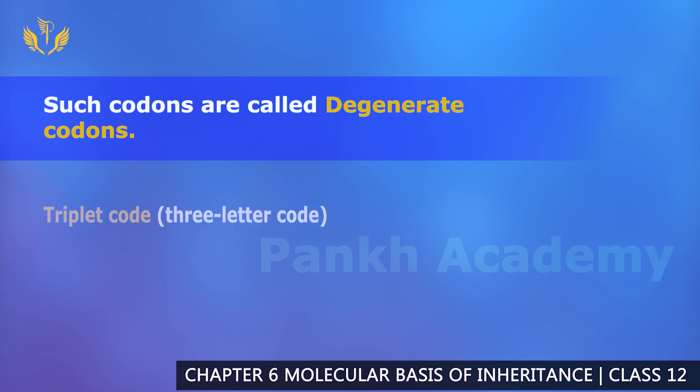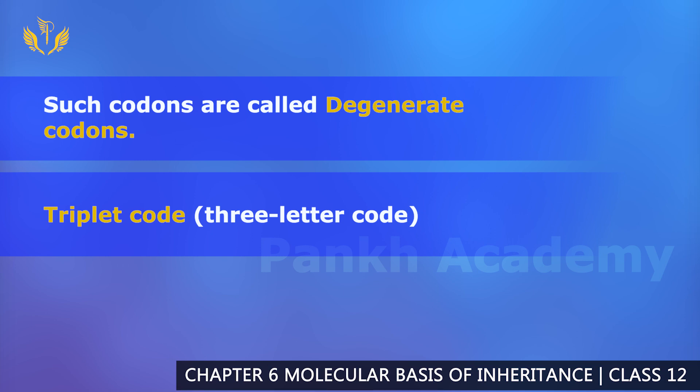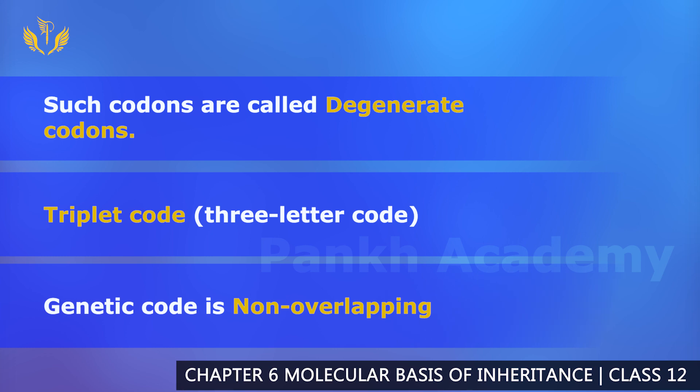The genetic code is a triplet code, meaning it is always read in groups of three nucleotides. Also, genetic coding is non-overlapping — for example, if you have UUA, the UU portion will never overlap with the UA portion. It will always be non-overlapping and clearly distinct.